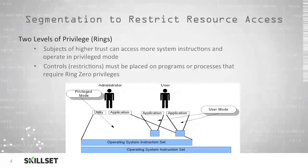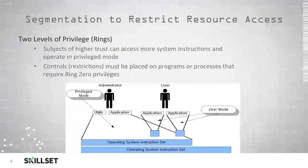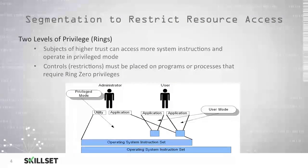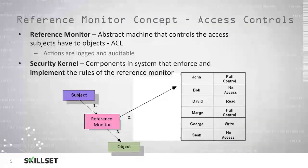The administrator is able to access a privileged mode, which allows them to operate in the lower, more controlled rings. Whereas the user is not permitted to access the operating system instructions — they are required to run in user mode and their applications cannot interfere with the system directly.